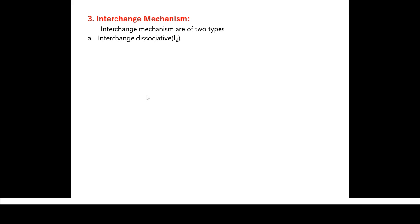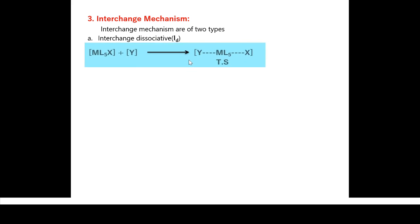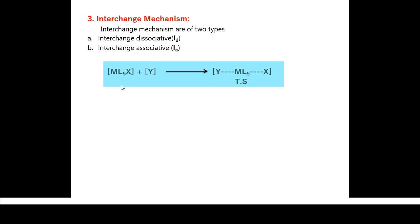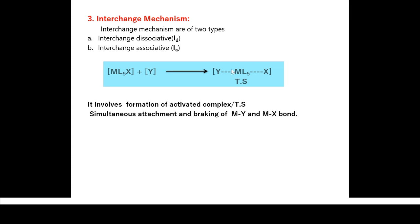The interchange mechanism is of two types: interchange dissociative (Id) and interchange associative (Ia). In this mechanism, ML₅X reacts with Y to give a transition state (activated complex) in which there is simultaneous attachment of the M–Y bond and simultaneous breaking of the M–X bond.